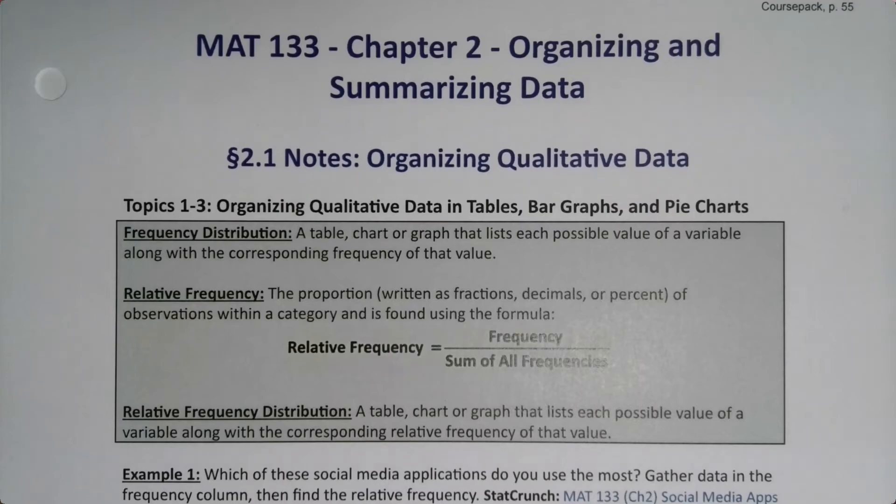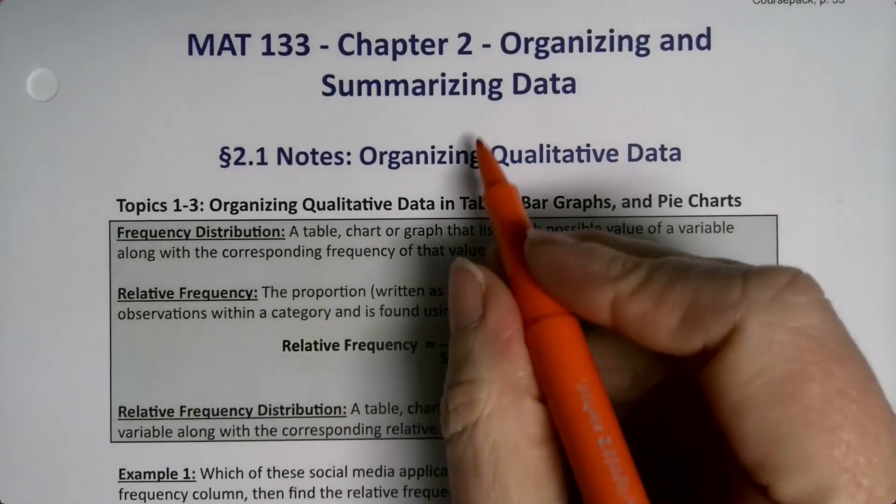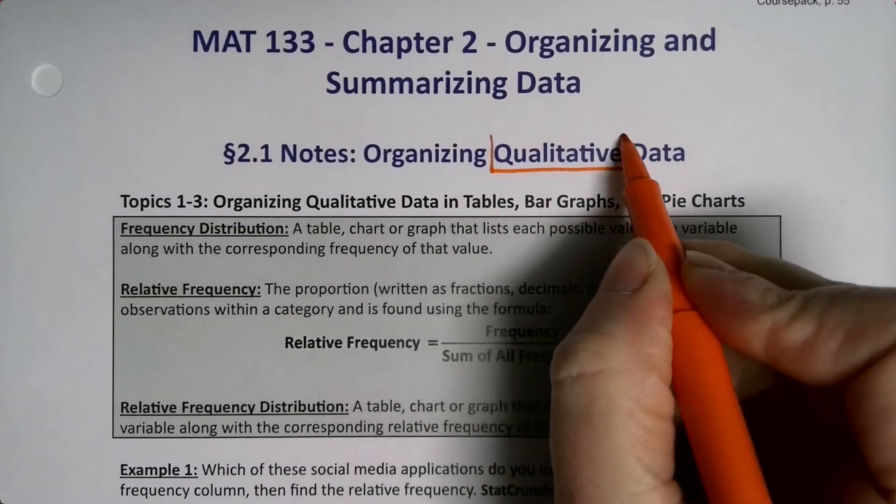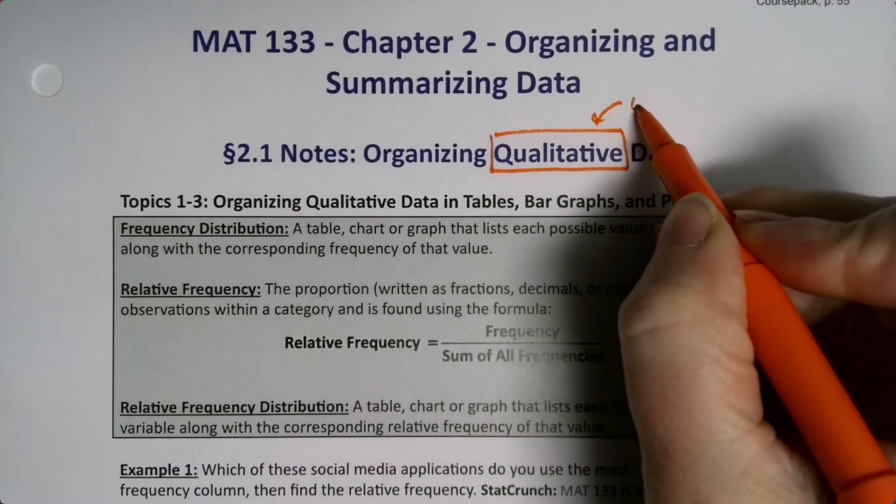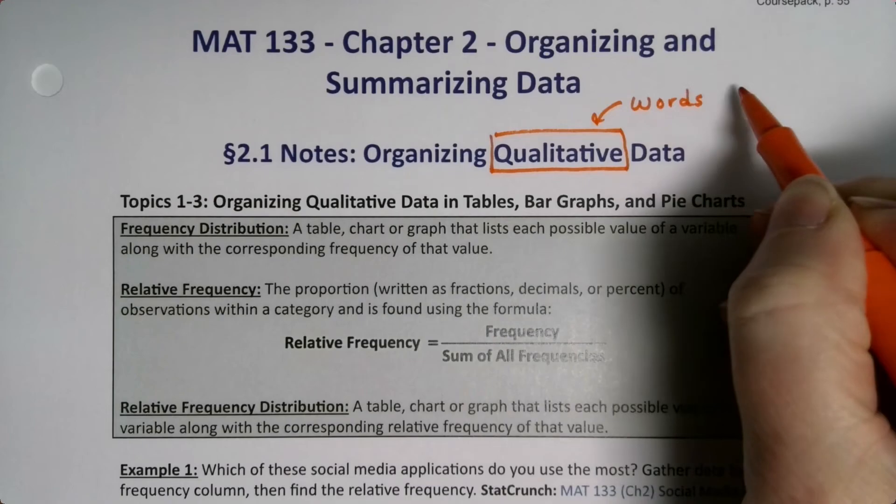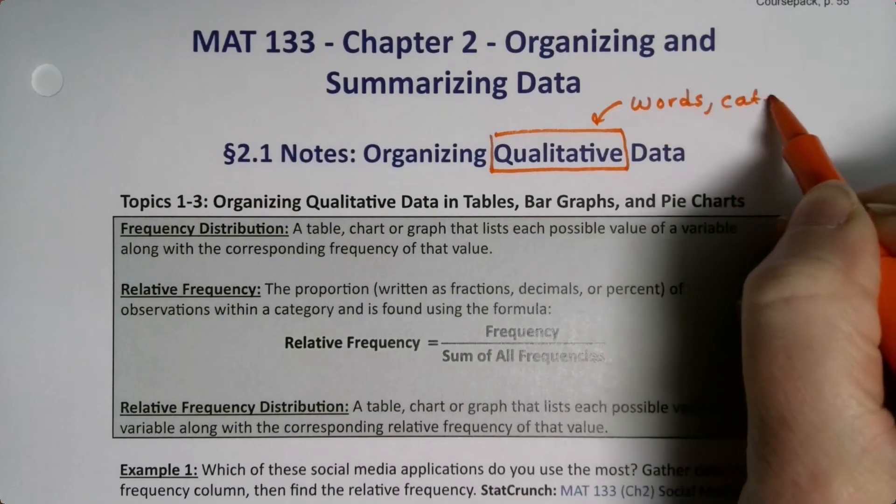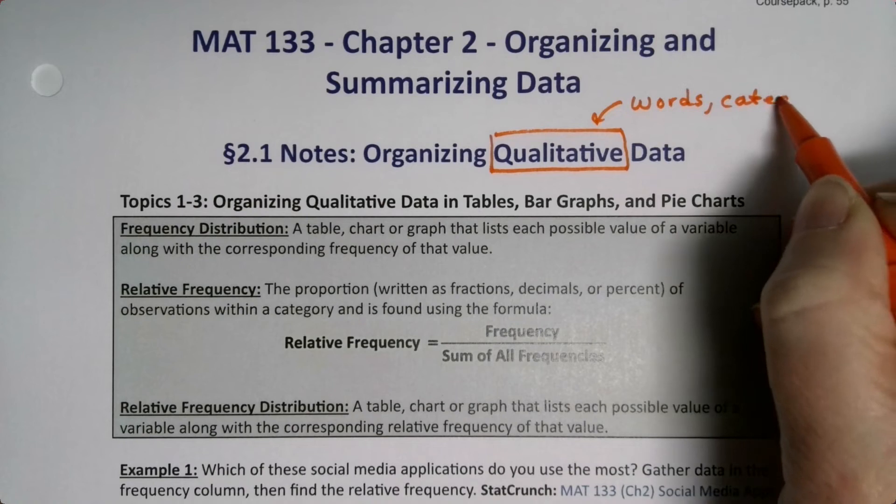All right, section 2.1 we're going to organize qualitative data. Now qualitative data, as we learned in section 1.1, are data that are words and categories. So that's what this section is going to be about. Now if you're thinking, well what about the numerical sections? Those are sections 2.2 and 2.3.